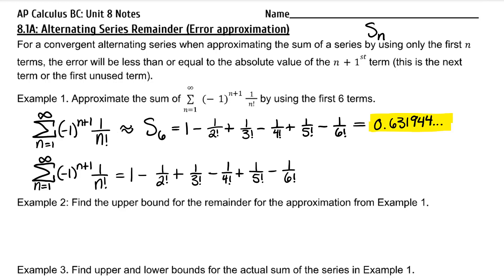In example two, they're asking us to find the upper bound for the remainder for the approximation from example one — how far off from the actual infinite sum is this sixth partial sum. For a convergent alternating series, the absolute value of each term must be less than or equal to the absolute value of the term before. For instance, 1 half is less than 1, 1 over 6 is less than 1 half, and 1 over 24 is less than 1 over 6, and so on.